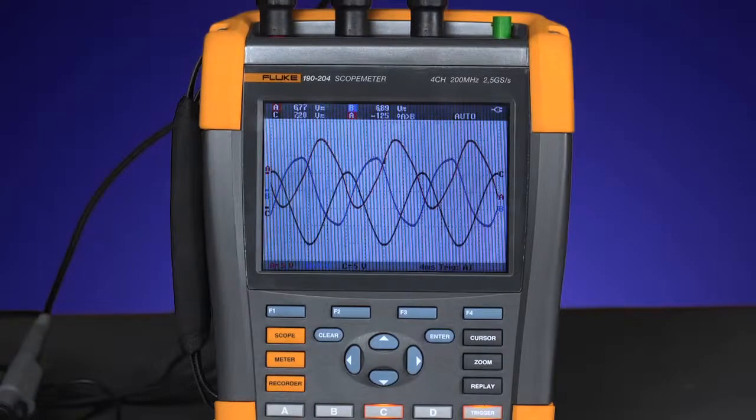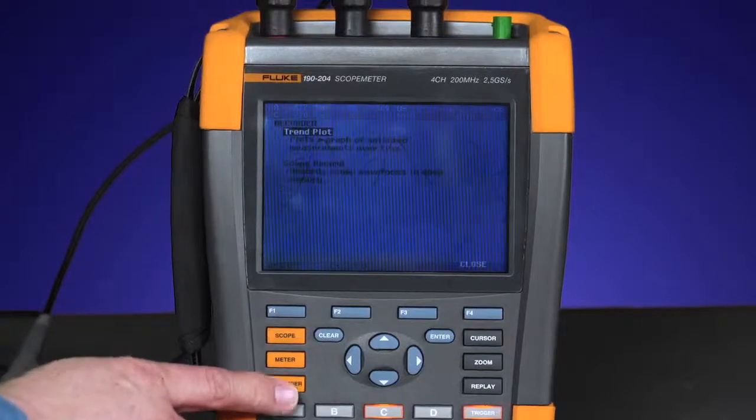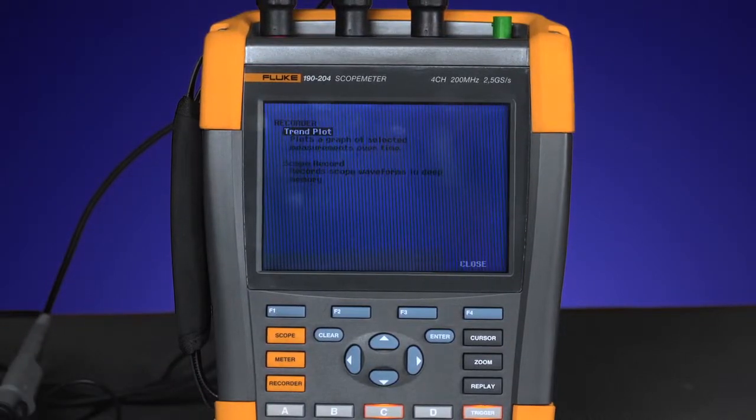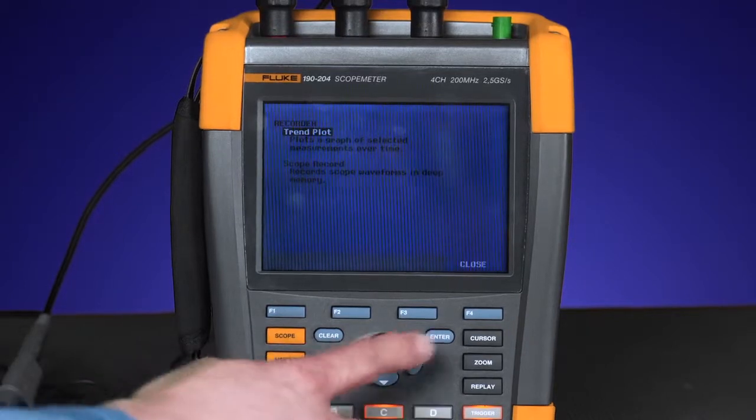In order to capture a random event, we'll use the function called recorder mode. In trend plot mode, you could capture or record events from as little as milliseconds up to 22 days.